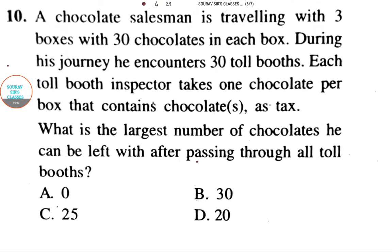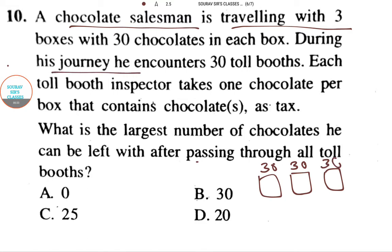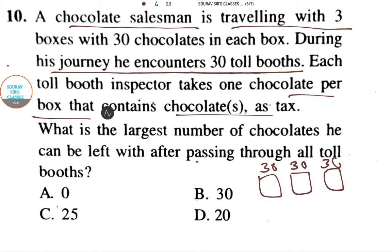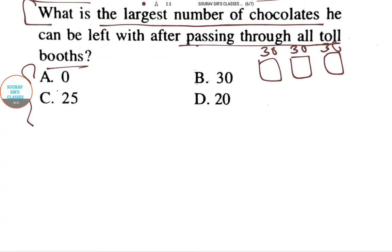Welcome to Short Officer Classes. This question is about a chocolate salesman traveling with three boxes containing 30 chocolates in each box. During his journey he encounters 30 toll booths. Each toll booth inspector takes one chocolate per box that contains chocolate as tax. The question is: what is the largest number of chocolates he can be left with after passing through all the toll booths?